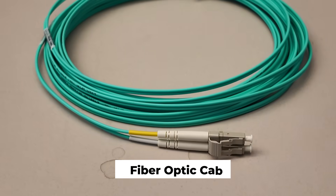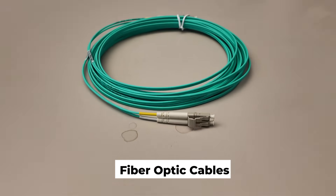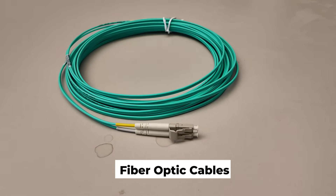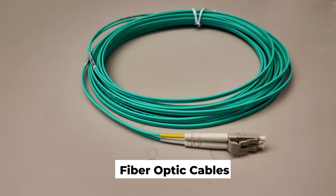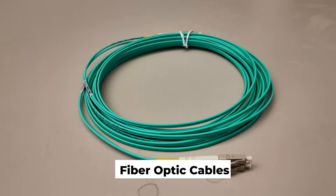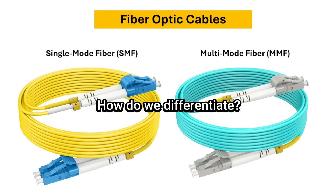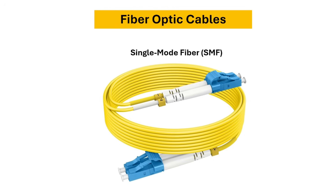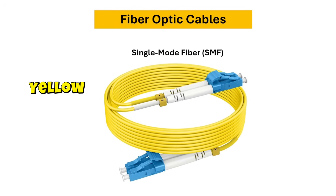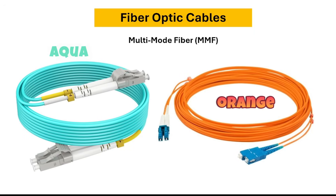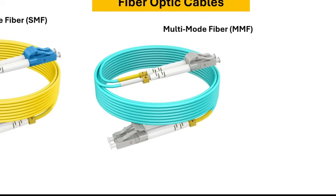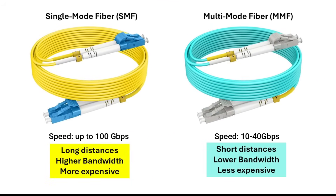Now let's talk about fiber optic cables. Fiber optic cables transmit data as light, making them faster and more reliable than copper cables, especially for long distances. We need to remember the two types: single mode fiber and multi-mode fiber. Just like ethernet cables, they are color-coded — single mode is yellow, and multi-mode is typically orange or aqua. The main differences between these cables are speed and maximum distance of usage.